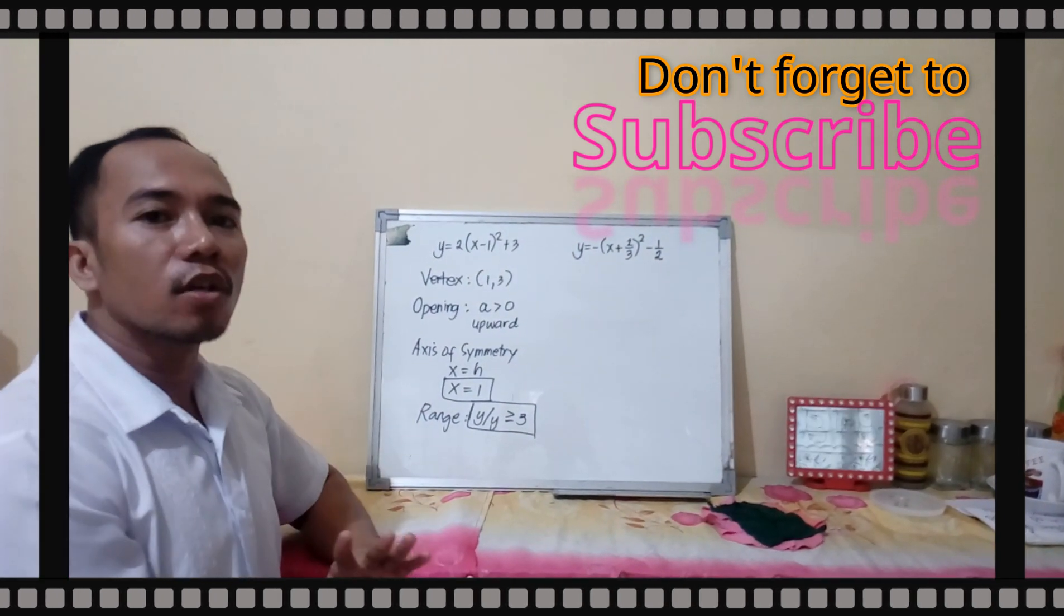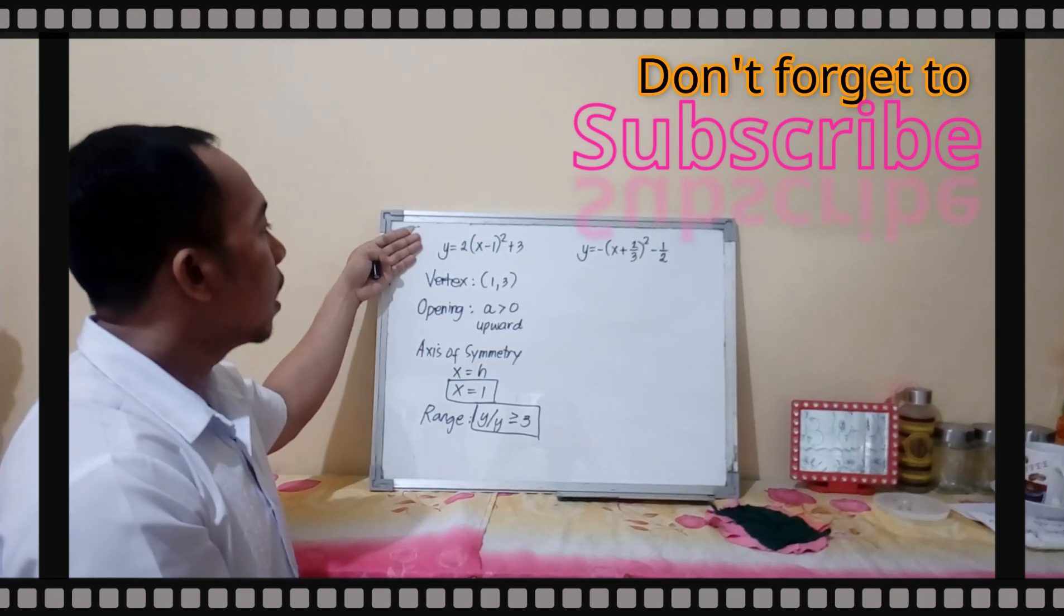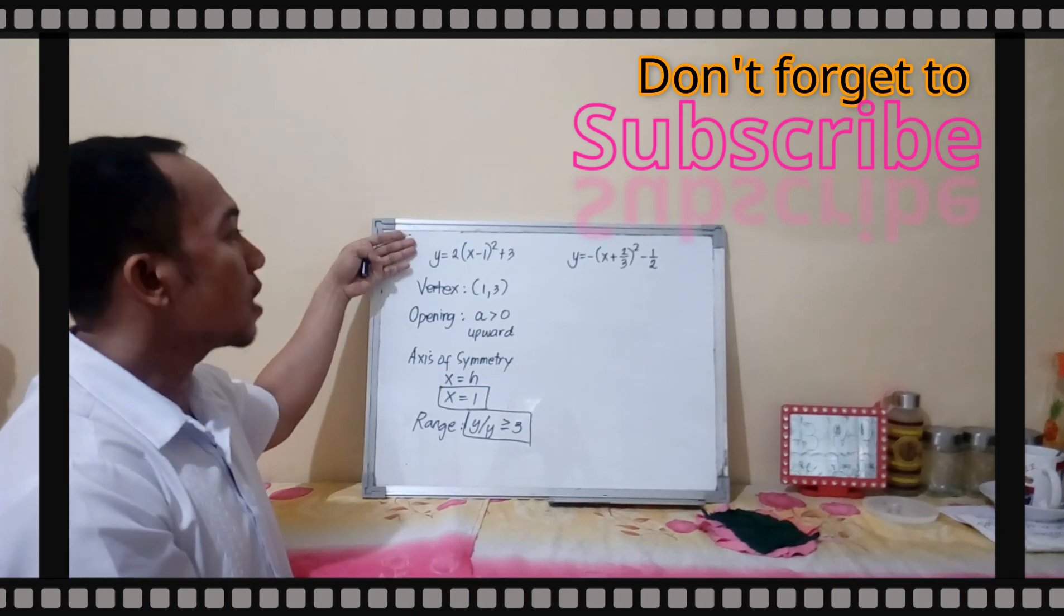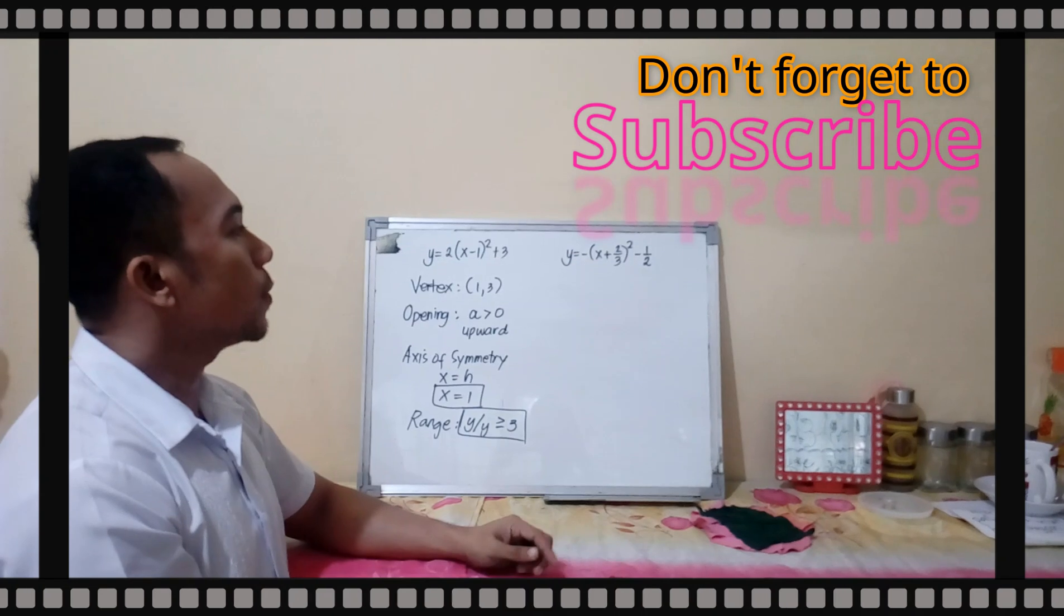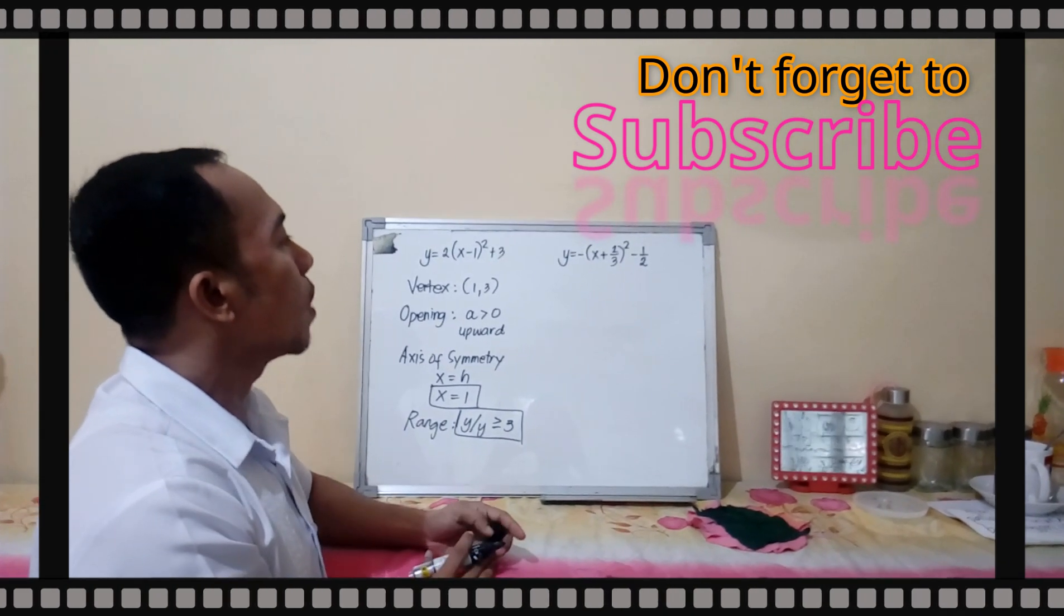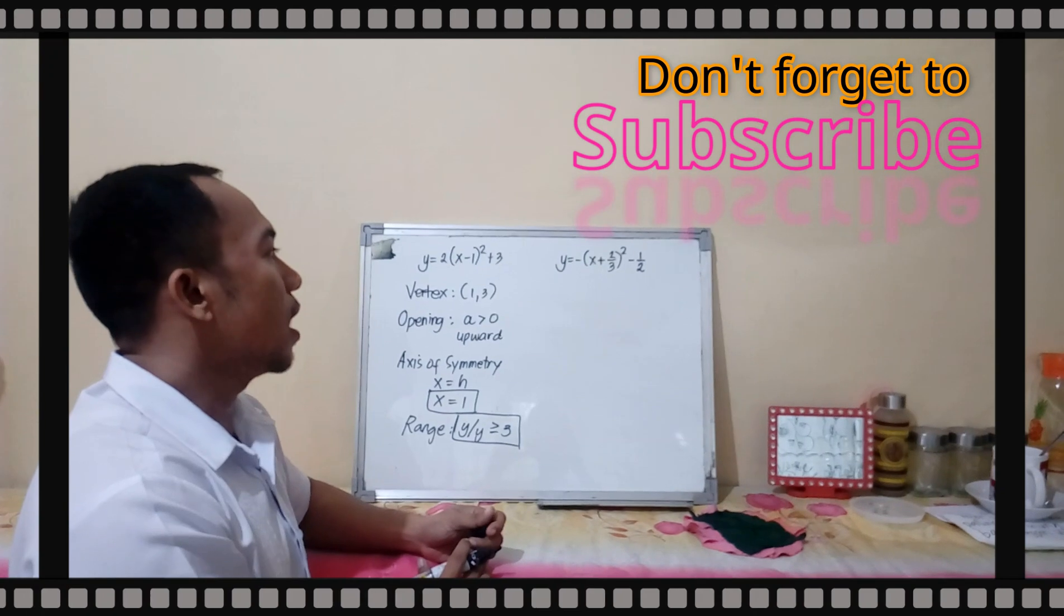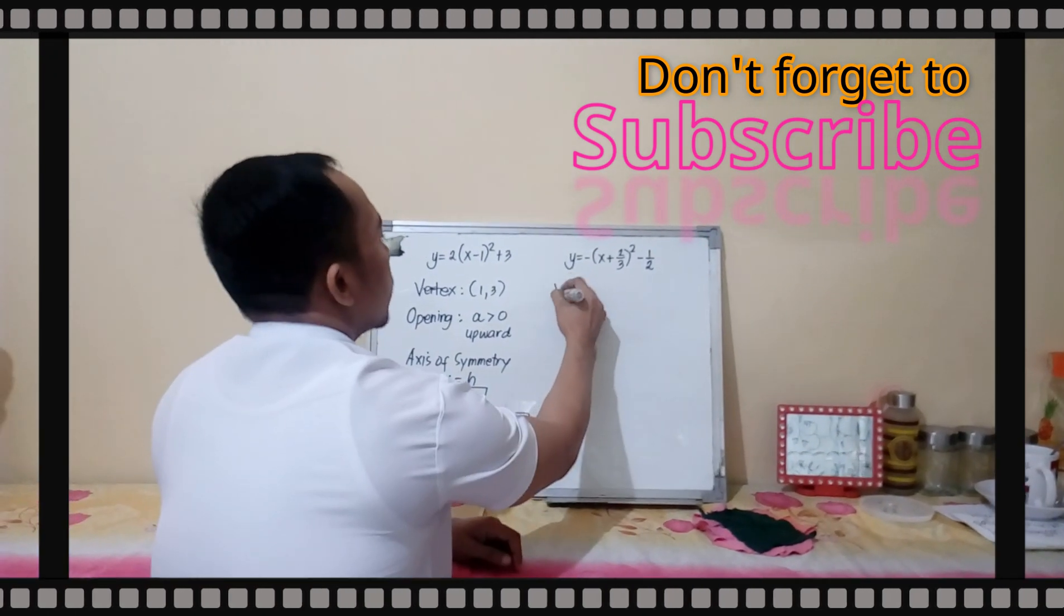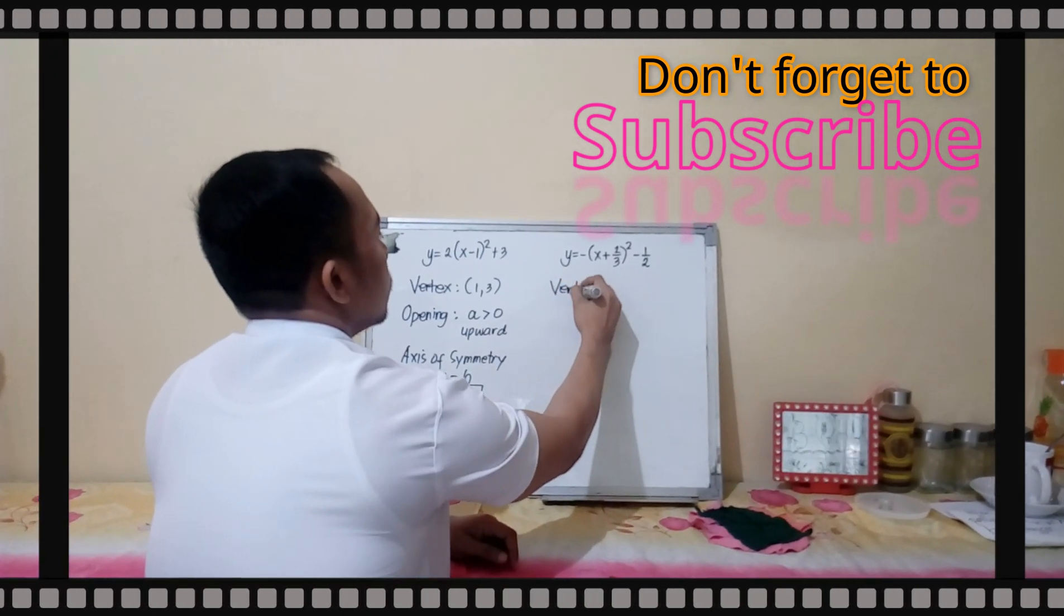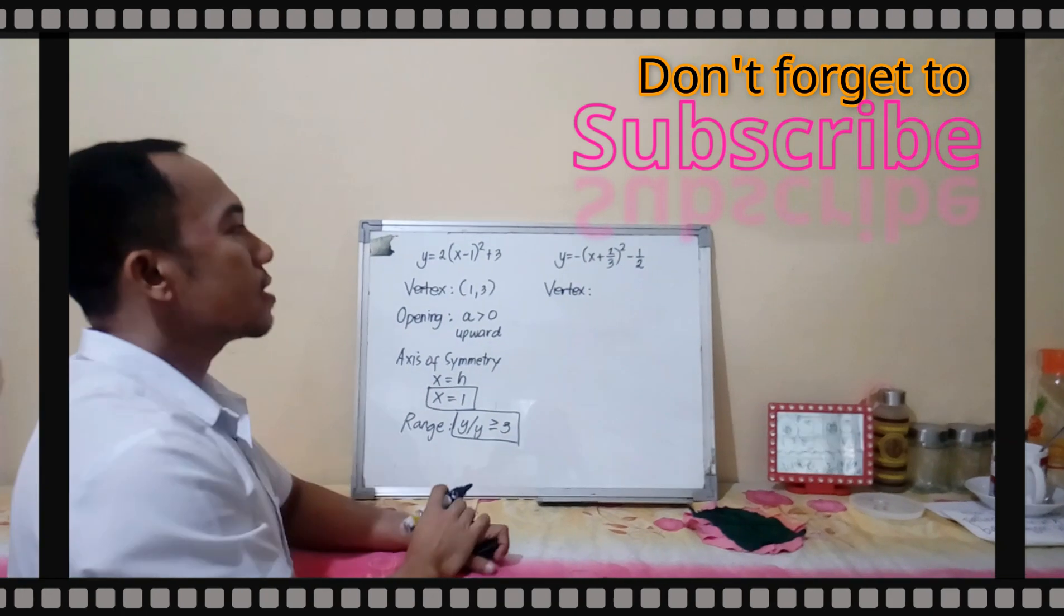We got 5 different concepts from the vertex form of this kind. Another example is y equals negative quantity x plus 2 over 3 squared minus 1. Again, we will get the vertex.